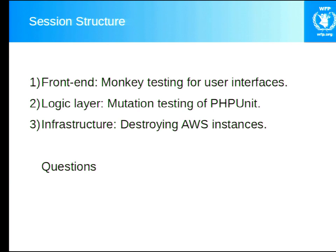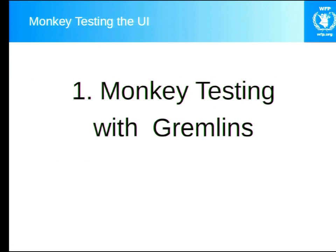I'm going to show you three tools. The first starts at the front end — the user interface. We'll then work our way down to the second tool, looking at the logic layer where the PHP sits, specifically mutation testing for PHP unit tests. And third, the last layer will be infrastructure — looking at ways we can destroy AWS instances and still maintain your application up and running. At the end, we'll have time for questions.